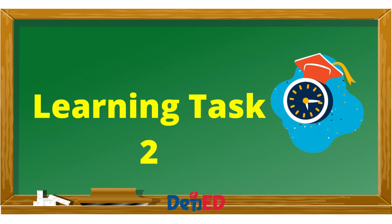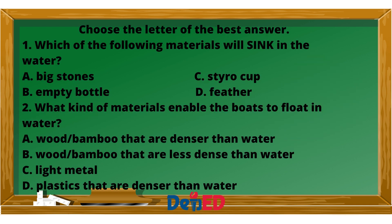Learning Task 2 — Choose the letter of the best answer. Number 1: Which of the following materials will sink in water? A. Big stones, B. Empty bottle, C. Styrofoam cap, D. Feather. Number 2: What kind of materials enable boats to float in water? A. Wood or bamboo that are denser than water, B. Wood or bamboo that are less dense than water, C. Light metal, D. Plastics that are denser than water.